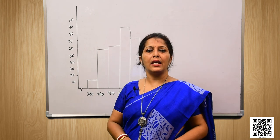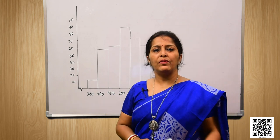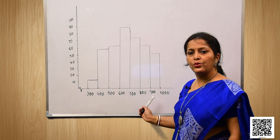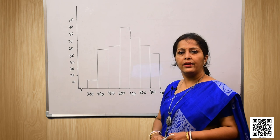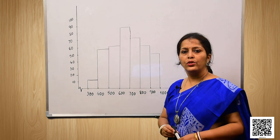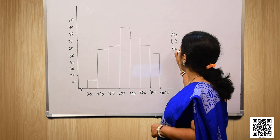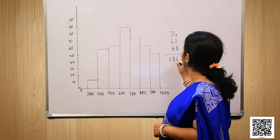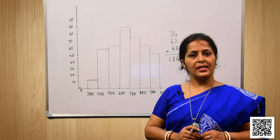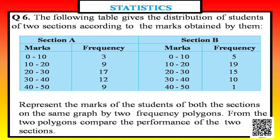For bit 2, how many lamps have a lifetime of more than 700 hours? This includes the intervals 700 to 800, 800 to 900, and 900 to 1000. The frequencies are 74, 62, and 48 respectively. The total is 74 plus 62 plus 48, which equals 184. So 184 lamps have a lifetime of more than 700 hours.